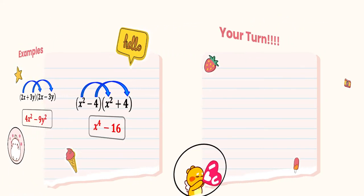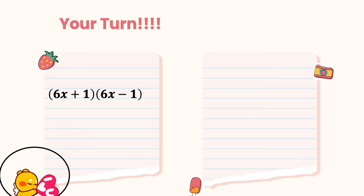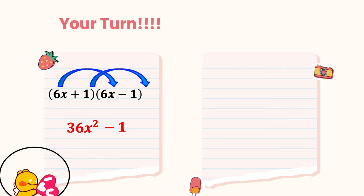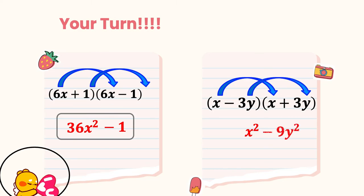Now it's your turn — I will still help you. For (6x + 1)(6x − 1): 6x times 6x gives 36x², and 1 times 1 gives 1. Using the shortcut, the square of 6x is 36x² and the square of 1 is 1, so the answer is 36x² − 1. For the last example, (x − 3y)(x + 3y): x times x gives x², and 3y times 3y gives 9y², so the answer is x² − 9y².